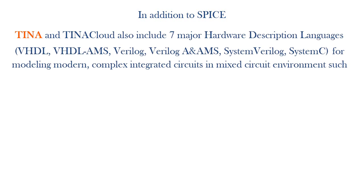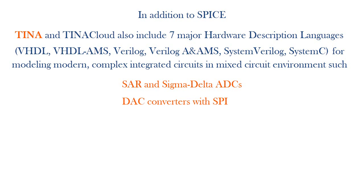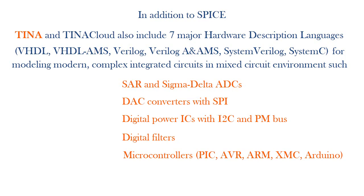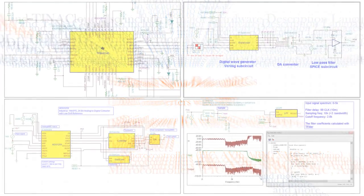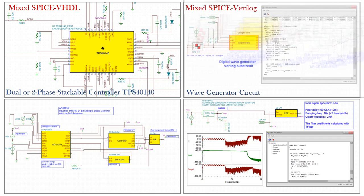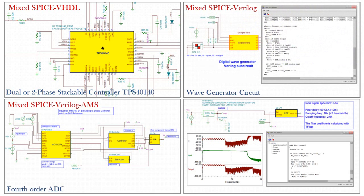These HDLs support mixed circuit environments such as SAR and Sigma Delta ADCs, DAC converters with SPI, digital power ICs with I2C and PM bus, digital filters, microcontrollers including PIC, AVR, ARM, XMC, Arduino, and more. Here are a few examples: mixed SPICE and VHDL, mixed SPICE and Verilog, mixed SPICE and Verilog AMS, and mixed SPICE and System C.